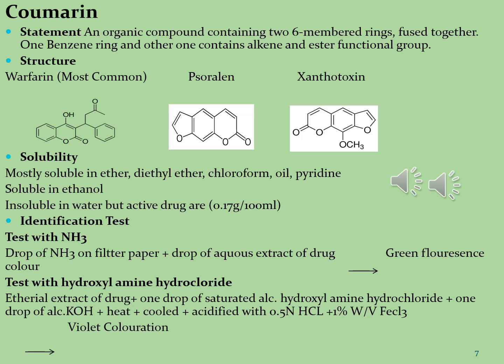Coumarins are organic compounds containing six two-membered rings fused with each other — one benzene ring and another containing alkene and ester functional groups. You can see here three examples of coumarin molecules, which are phytoconstituents in the coumarin category: the first molecule is warfarin, the second is psoralen, and the third is xanthotoxin.